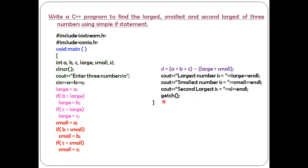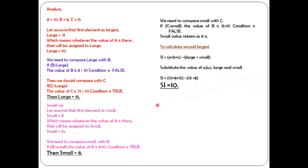At the end, the get function is used so that after compiling and running the program, when we input values and press enter, the output is displayed without immediately returning to the programming screen. The close flower bracket indicates the end of the C++ program. This is the complete program to find the largest, smallest, and second largest among three numbers. Thank you for watching this video.